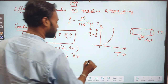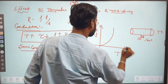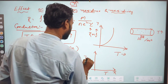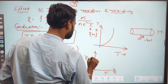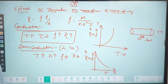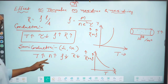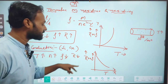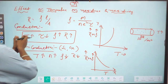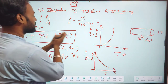If we draw a graph between temperature along the x-axis and resistance as well as resistivity along the y-axis for a semiconductor, the graph shows a decreasing curve. So in the semiconductor case, when temperature increases, electron density increases, and resistivity as well as resistance decreases. In the conductor case, when temperature increases, relaxation time decreases and resistivity as well as resistance increases.